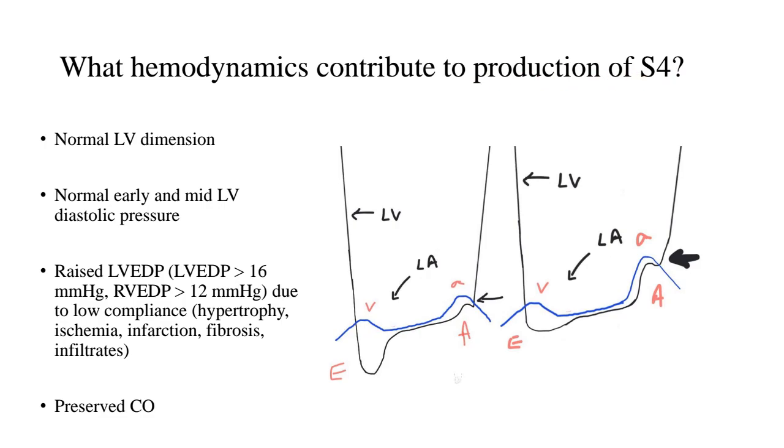What hemodynamics contribute to the production of S4? Now, there are certain hemodynamic prerequisites which are required for the production of the fourth heart sound. Number one is that the left ventricular dimension should be normal. If you look at pure causes of left ventricular S4, there should not be any dilatation of the left ventricle. Second, the early and the mid LV diastolic pressures are normal.